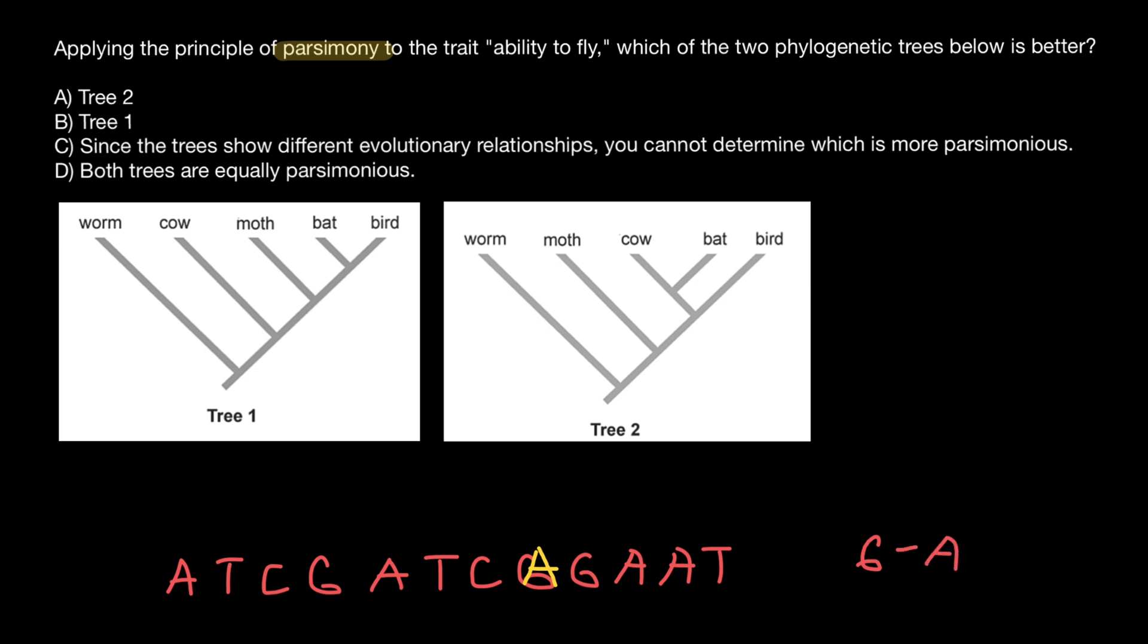But also what might happen is that guanine changes to cytosine, cytosine changes to thymine, and thymine then changes to adenine. So here is a sequence of events: guanine replaced with cytosine, cytosine with thymine, and thymine with adenine. More than that, we can suggest that thymine is replaced with cytosine, cytosine with guanine, guanine with adenine, and then back with thymine. We call this reverse mutation.